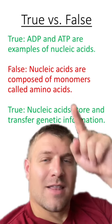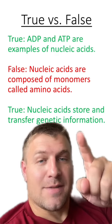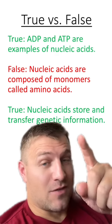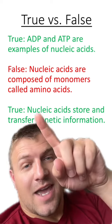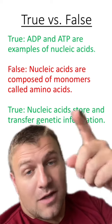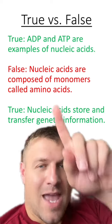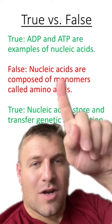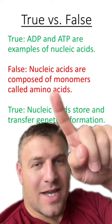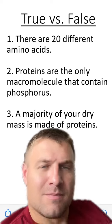The first and last are true. ADP and ATP are examples of nucleic acids, and they typically store genetic information. However, the monomer of nucleic acids is not amino acids — it's the nucleotide.